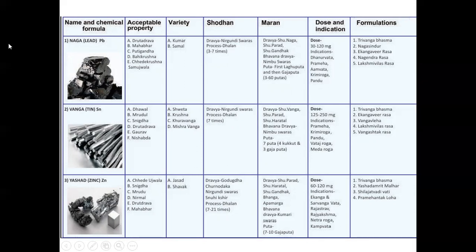The formulations available from Naga Bhasma include Trivanga Bhasma — Trivanga meaning Naga, Vanga, and Jasada together. From my practice, I always use Trivanga Bhasma for Ojo Vardhana — boosting immunity. It is especially related to Shukradhatu. Whenever there are sexological problems like erectile dysfunction, premature ejaculation, or nightfall, Trivanga Bhasma is very useful. Other products include Naga Sindhu, Ekangavira Rasa, Nagendra Rasa, and Lakshmi Vilasa Rasa — all good tonics and Ojo Vardhaka. Lakshmi Vilasa Rasa is also very good for respiratory and heart problems.